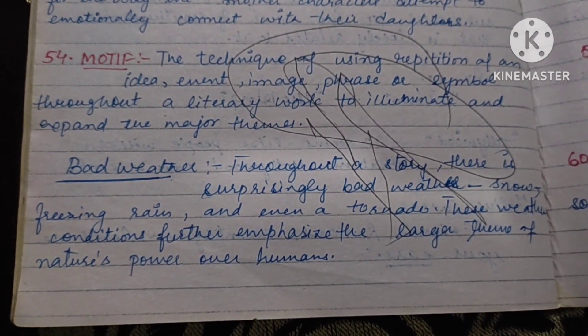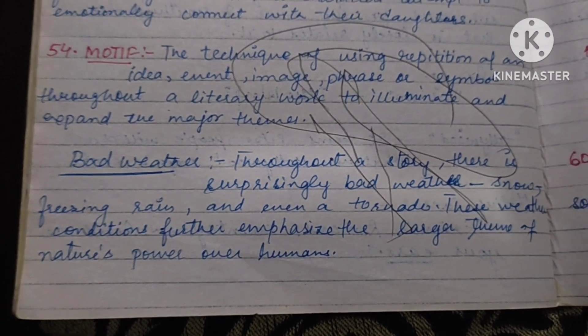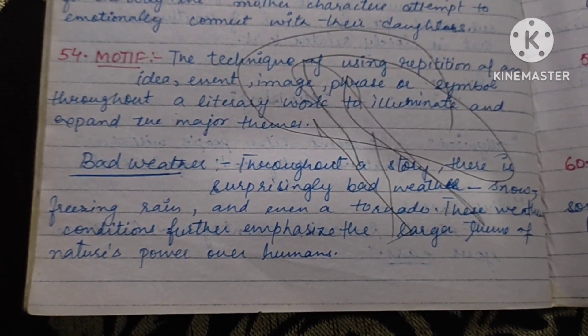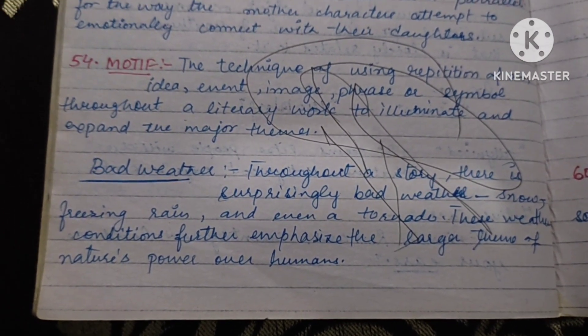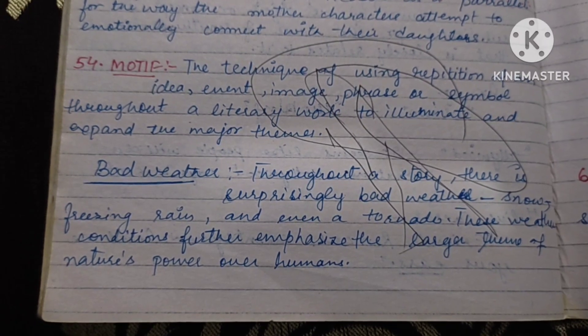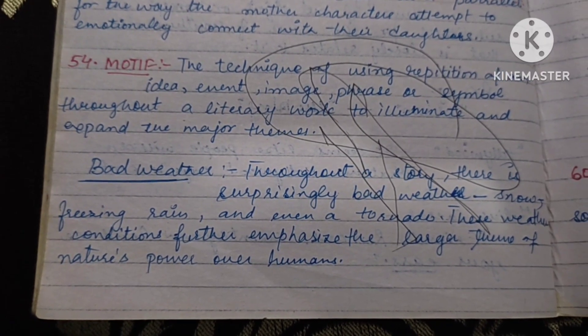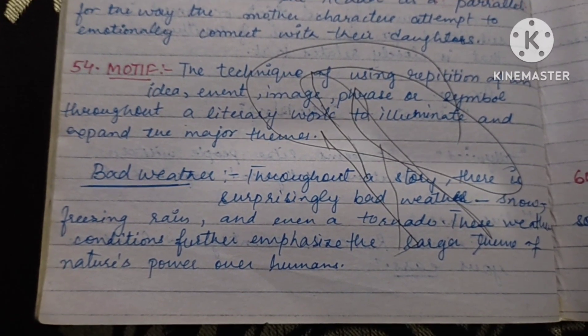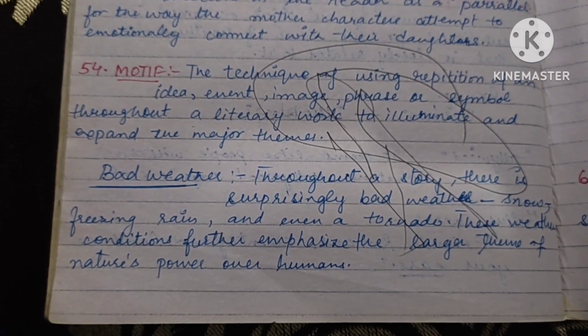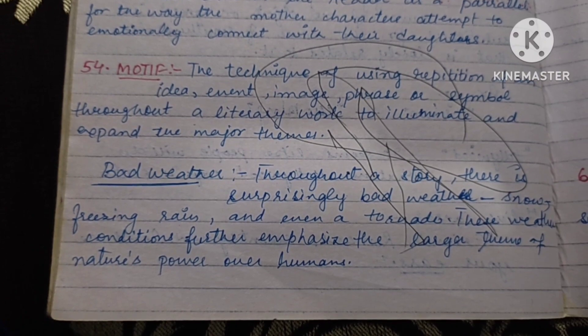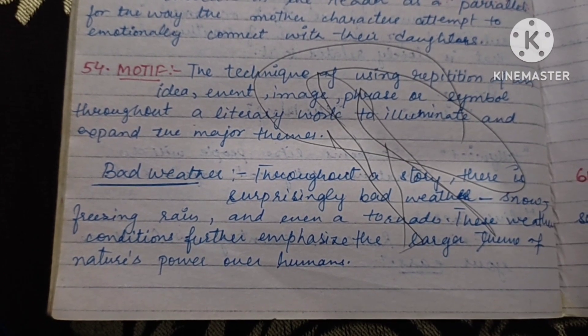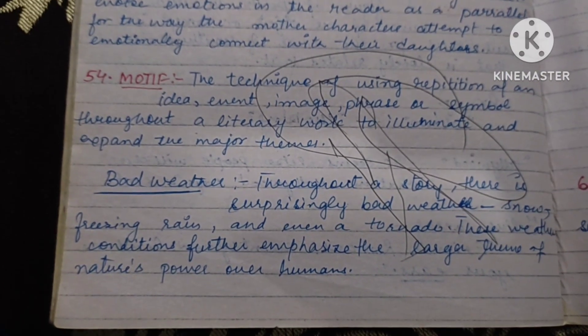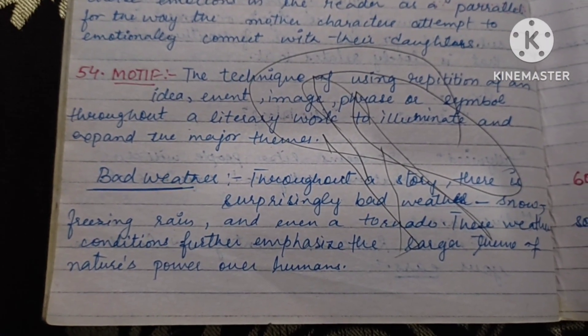Like in any story, you will notice bad weather. Throughout the story, it will be surprisingly bad weather — it will be snow, it will be freezing rain, it will be a tornado. So these weather conditions expand the major theme.